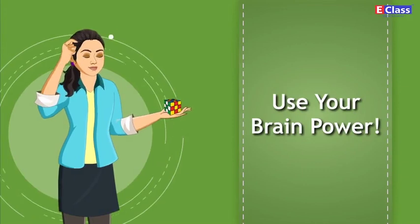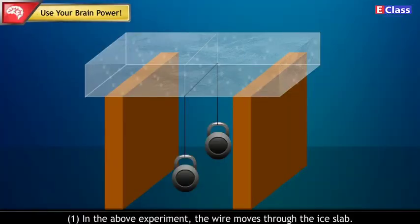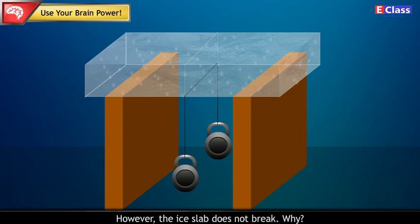Use your brain power: In the above experiment, the wire moves through the ice slab. However, the ice slab does not break. Why?